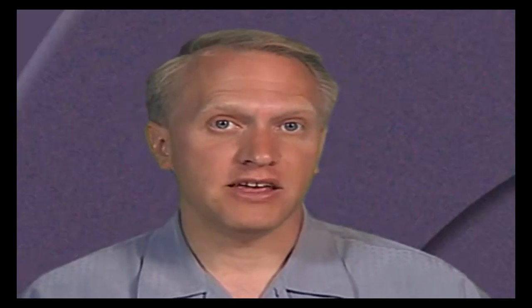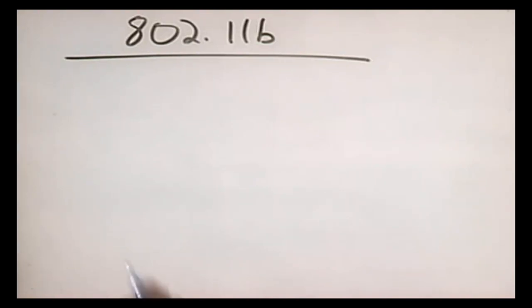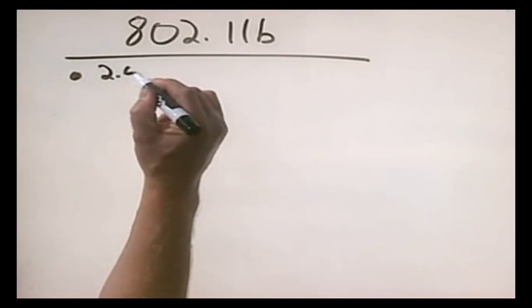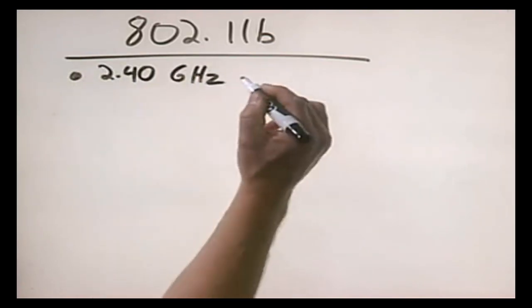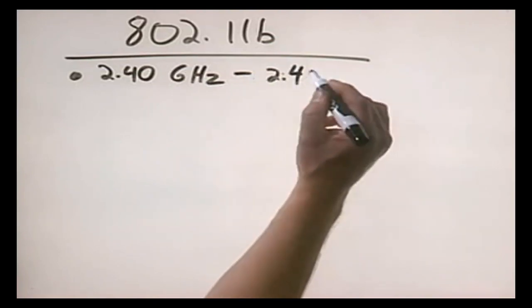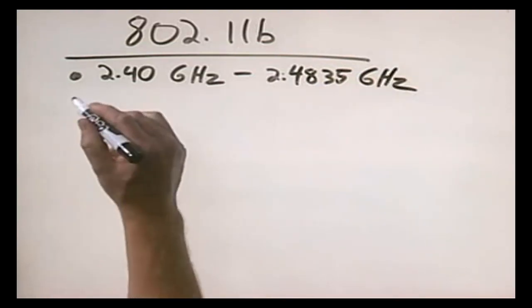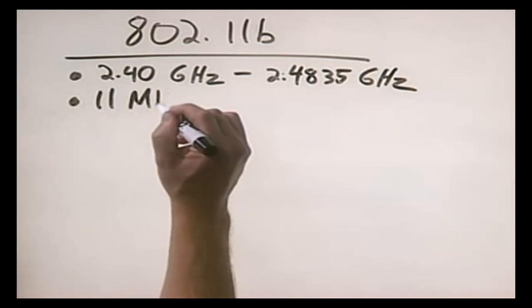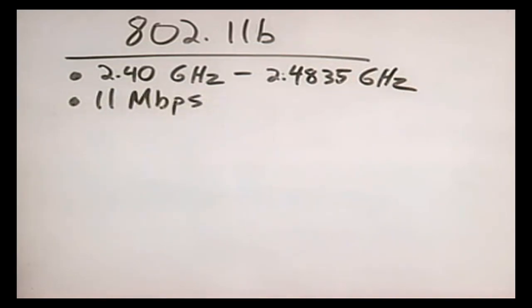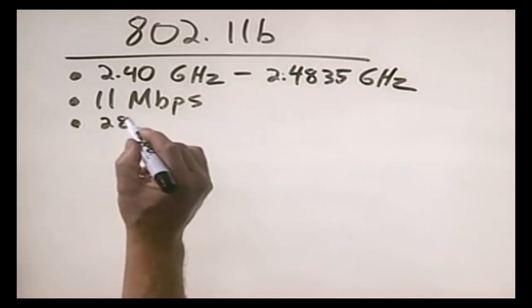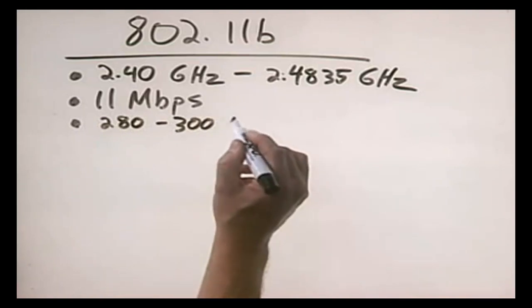The wireless networking standards we use are specified in the 802.11 standard, and within that standard there are several subspecifications. The first is 802.11b. The 802.11b standard specifies a radio frequency of 2.40 gigahertz to 2.4835 gigahertz. It operates at a speed of 11 megabits per second and has a range of around 280 to 300 feet.